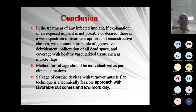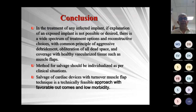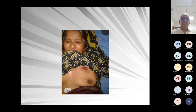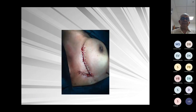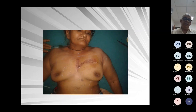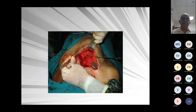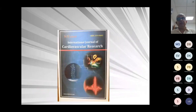Conclusion: In the treatment of infected devices, if explantation of an exposed implant is not possible or not desired, there is a wide spectrum of treatment options. The common principle is aggressive debridement, obliteration of dead space, and coverage with healthy well-vascularized tissue such as muscle flaps. Method of salvage should be individualized as per the clinical situation. Salvage of cardiac devices with pectoralis major muscle flaps is a technically feasible approach with favorable outcomes and low morbidity. Both papers have been accepted and published in an international journal of cardiology.